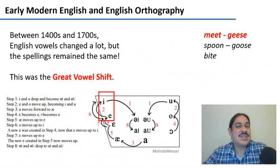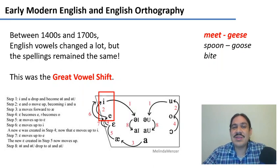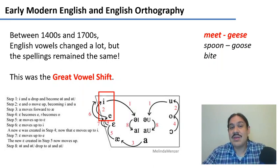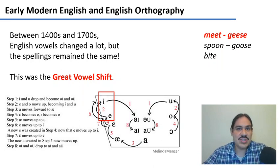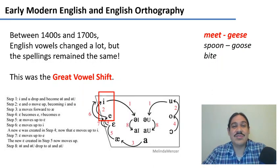I want to start by focusing on the orthography of English. Have you noticed that the orthography of English is kind of quirky — that sometimes you can write the same sound with different letters? Or if you studied something like German or Spanish or Finnish, the orthography looks a lot more regular than the orthography of English.